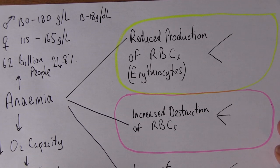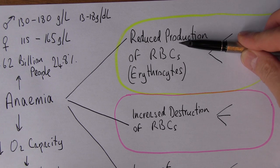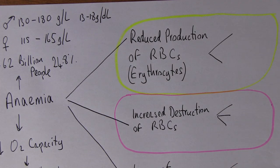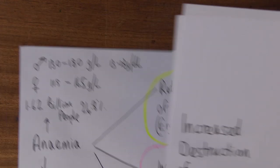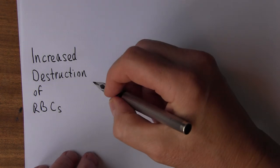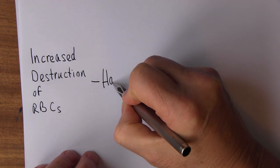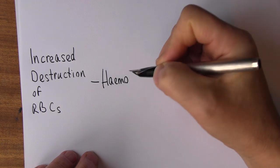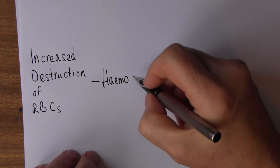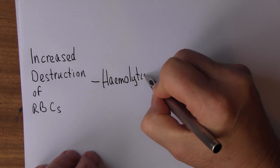In our considerations of the causes of anemia, we've considered reduced production of red blood cells. We now want to look at increased destruction of red blood cells once they've been produced in the red bone marrow. So we're thinking about increased destruction of red cells. When you break up red cells, that's called hemolysis, so these conditions are called hemolytic anemias.